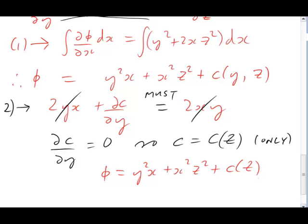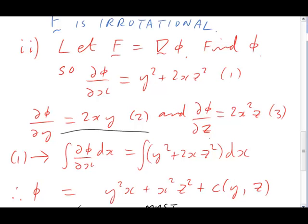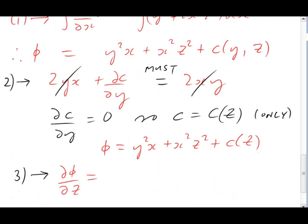Clearly, number 3 is going to fix the z dependence of c for us. ∂phi/∂z: we need to substitute our phi into the left-hand side and get ∂phi/∂z. On the right, we must insist it equals 2x²z. So differentiating phi with respect to z, the y²x term disappears. z² becomes 2z, so we get 2x²z. And then there's c. In principle it might depend on z, so we write ∂c/∂z. Equation 3 told us this left-hand side must equal 2x²z on the right. Once again there's neat cancellation, and we're left with ∂c/∂z equals 0.